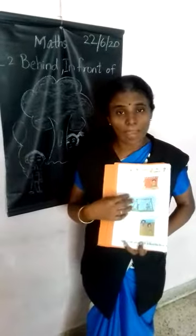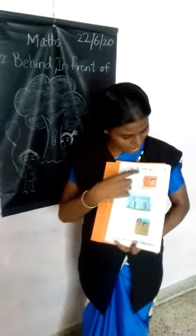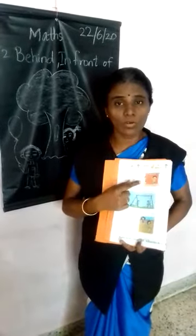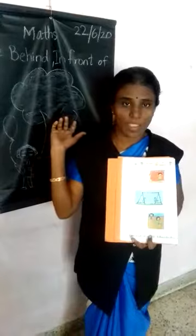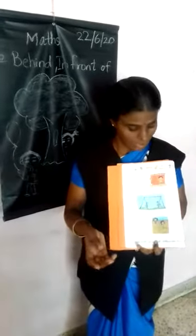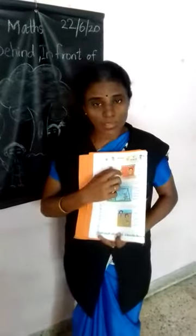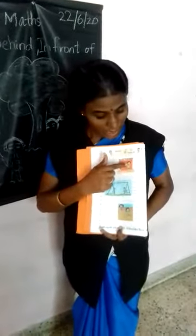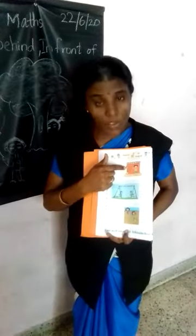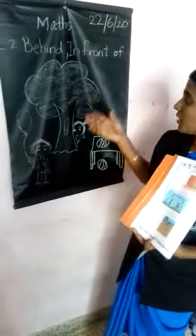Now we will learn page number two. Page number two is 'behind' and 'in front of.' Behind means at the back, and in front of means at the front. See here, two boys are there — one boy is in front of the curtain and one boy is behind the curtain. You can also see a tree here.